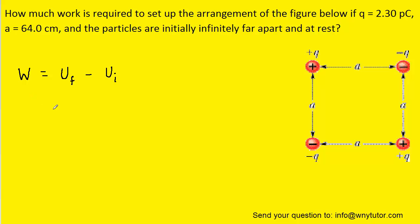We know that the work required to set up the arrangement of charges shown in the picture is equal to the change in electrical potential energy, which we can write as the final electrical potential energy minus the initial electrical potential energy. Because the charges initially are infinitely far apart, that means that their initial electrical potential energy is actually zero joules. So we can eliminate this term from the equation.